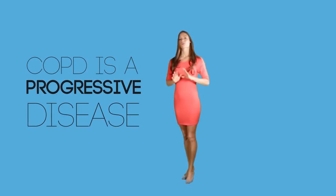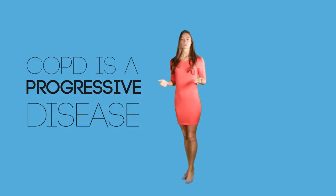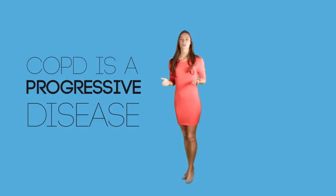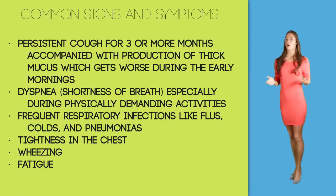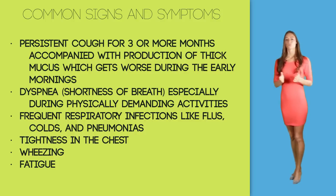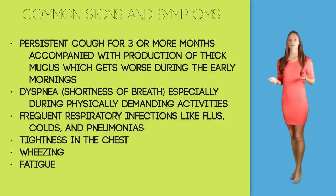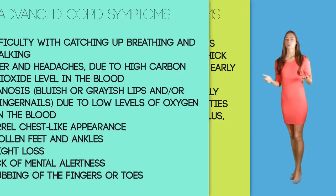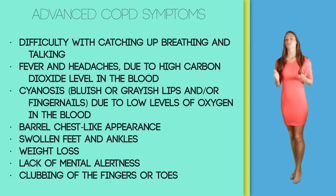COPD is a progressive disease. In the early stages there may be no symptoms, or they may be very ordinary and mild. But with the progression of the disease, more severe symptoms start to appear. Common signs and symptoms include a persistent cough for three or more months accompanied with the production of thick mucus, which gets worse during early mornings; dyspnea — shortness of breath — especially during physically demanding activities; and frequent respiratory infections like flus, colds, and pneumonia.